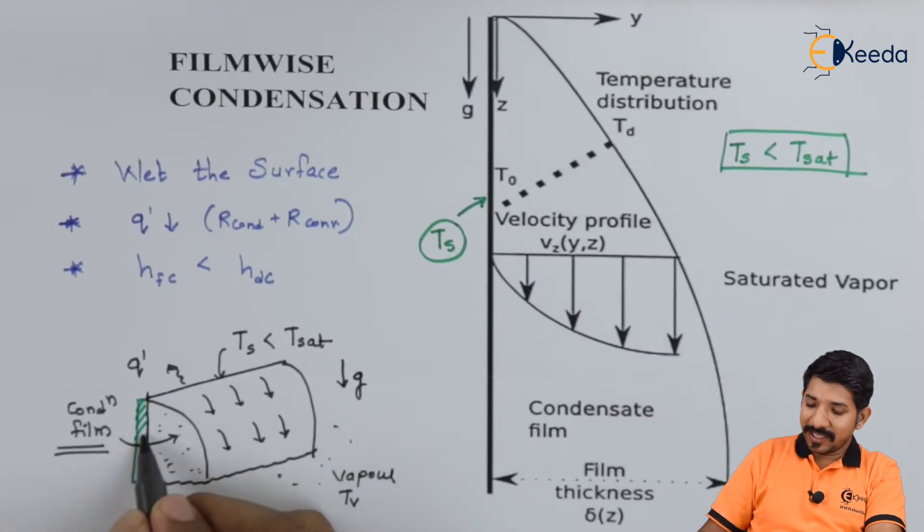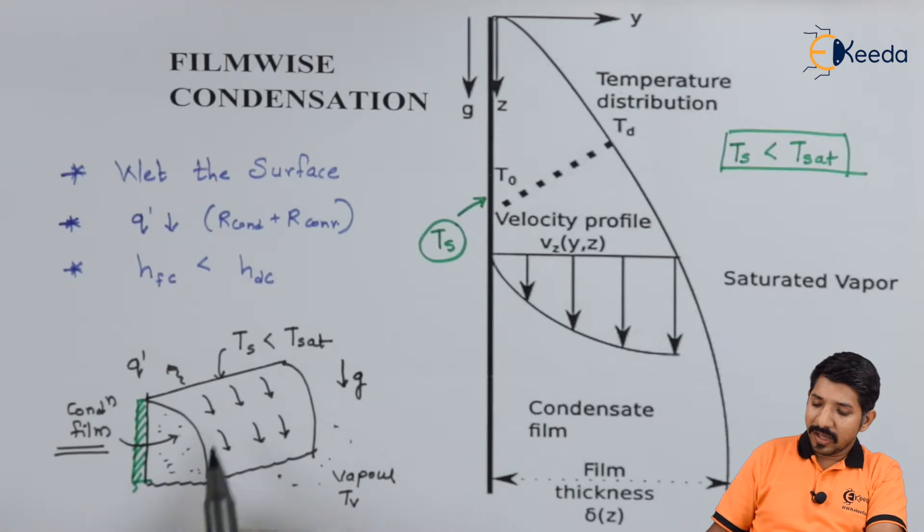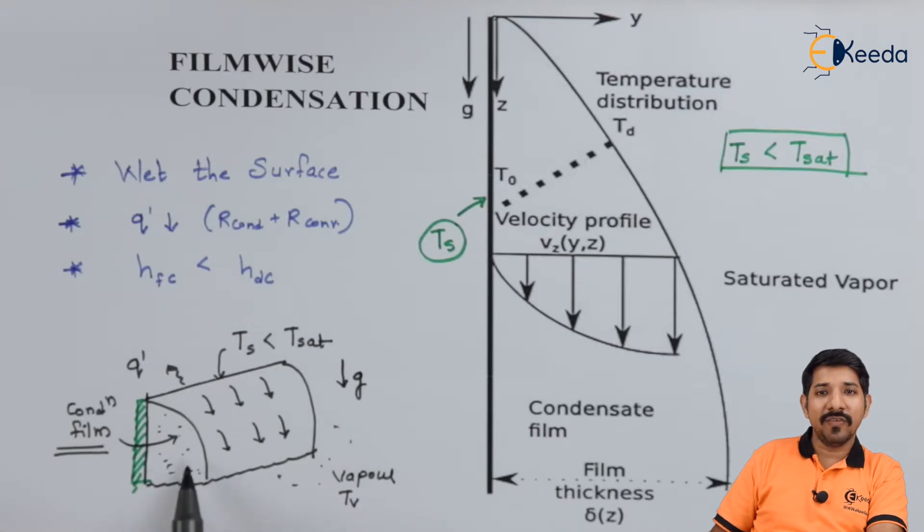During condensation, if I consider this as a surface, a small film will be formed over the surface. So the entire surface will be covered by that fluid itself.